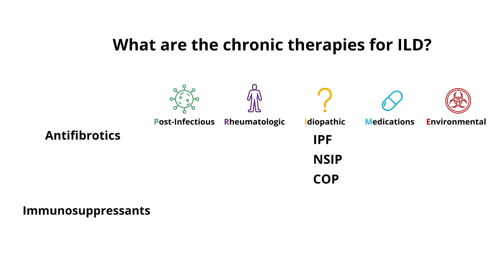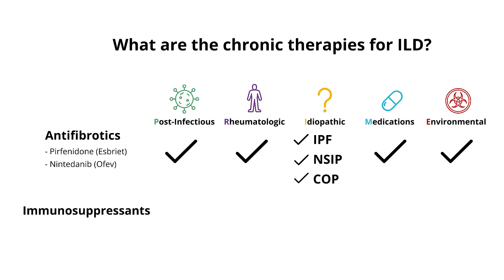First up, the antifibrotic agents. The options for antifibrotics are pirfenidone, brand name Esbriet, and nintedanib, brand name OFEV. Good news — all patients with evidence of progressive fibrosis, no matter the type of ILD, are candidates for antifibrotics. While they don't reverse the fibrosis that's already there, they do help slow the decline in lung function, specifically the FVC or the functional vital capacity.